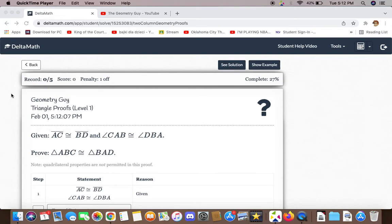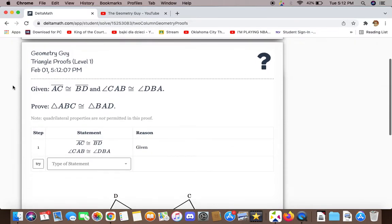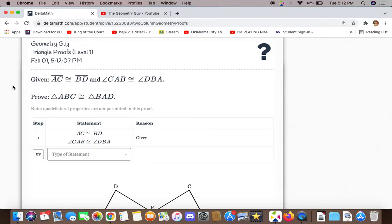Given line segments AC and BD are congruent to each other and angles CAB and DBA are congruent to each other, we now have to prove that triangles ABC and BAD are congruent to each other.